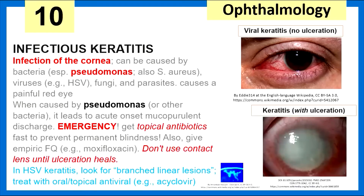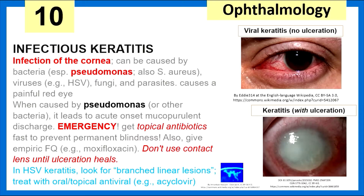Infectious keratitis — infection of the cornea — can be caused by bacteria, especially Pseudomonas; viruses such as HSV; fungi; and parasites. It causes a painful red eye. Caused by Pseudomonas, it's an emergency — we need topical antibiotics fast to prevent permanent blindness. We also give empiric fluoroquinolones such as moxifloxacin, and we tell the patient not to use contact lenses until the ulceration heals. In HSV keratitis, look for branched linear dendritic lesions. We treat HSV keratitis with oral or topical antivirals such as acyclovir.